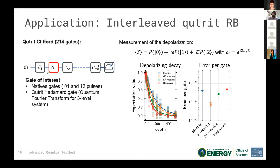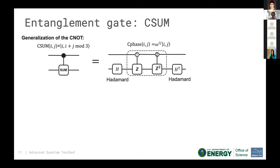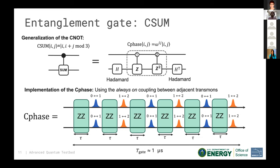Now, what about entanglement? On our chip we have a CSUM gate, which is the generalization of the CNOT to qutrits, depicted here — exactly like a CNOT but for qutrit logic. We construct it using an always-on coupling between adjacent transmons. One issue is that this is a very long gate, and at this early stage of qutrit development, its fidelity is not as high as the qubit entangling gate.